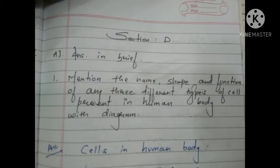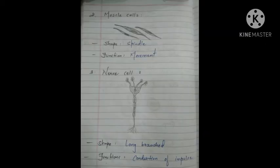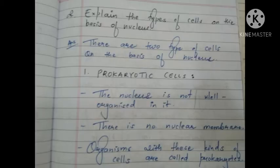Second scientific reason: plant cell is rigid while animal cell is comparatively soft. The cell wall is the outermost layer in a plant cell and it provides rigidity. Animal cells have only a cell membrane as the outermost layer and do not have a cell wall. Due to the presence of the cell wall, plant cells are rigid, and because of its absence, animal cells are soft. Now talking about Section D, answer in brief. Mention the name, shape, and function of any three different types of cells present in the human body with a diagram.